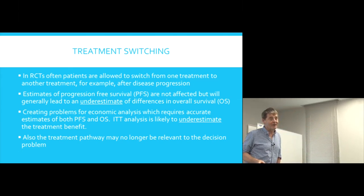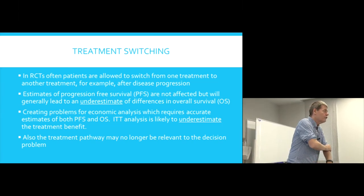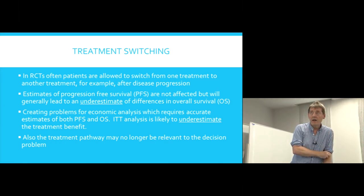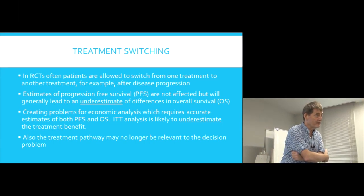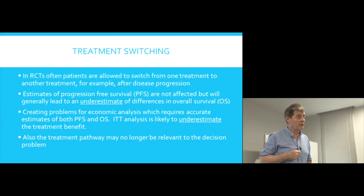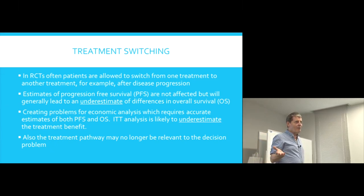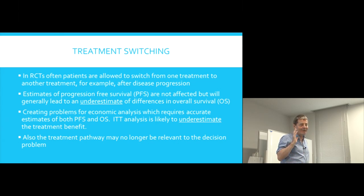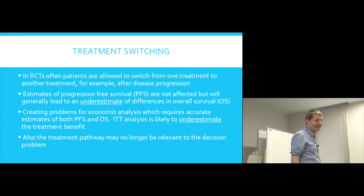Now, as if that's not enough of a problem, we then come to another problem and it's called treatment switching. In randomized controlled trials, patients are frequently allowed to switch treatment. For example, when their disease progresses they'll stop getting the treatment they were getting and they may well be offered the alternative treatment. Now this is perfectly reasonable — it's almost like punishing the patient for coming into the trial if you don't allow them to switch, because if they progress that drug has not worked for them. So we can't reasonably stop them from switching treatment.